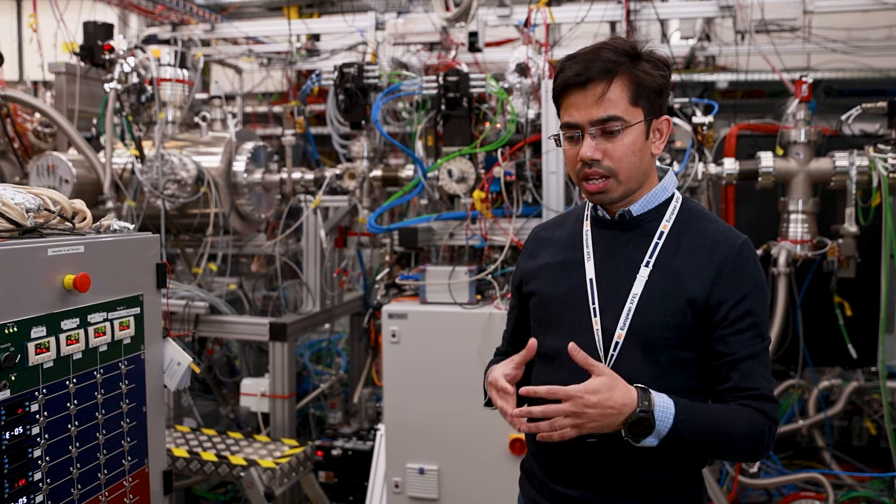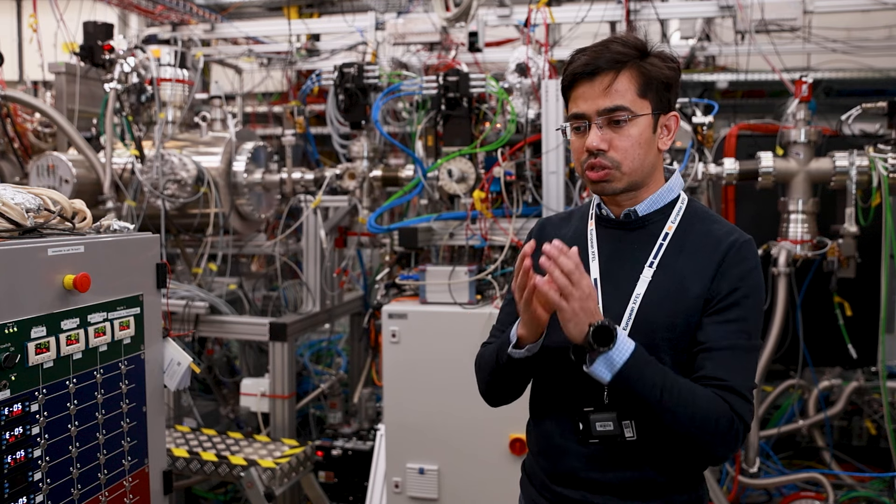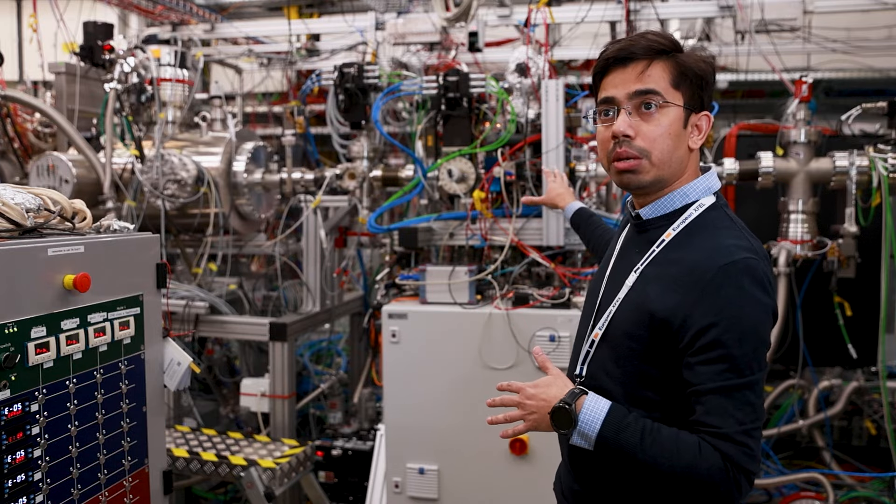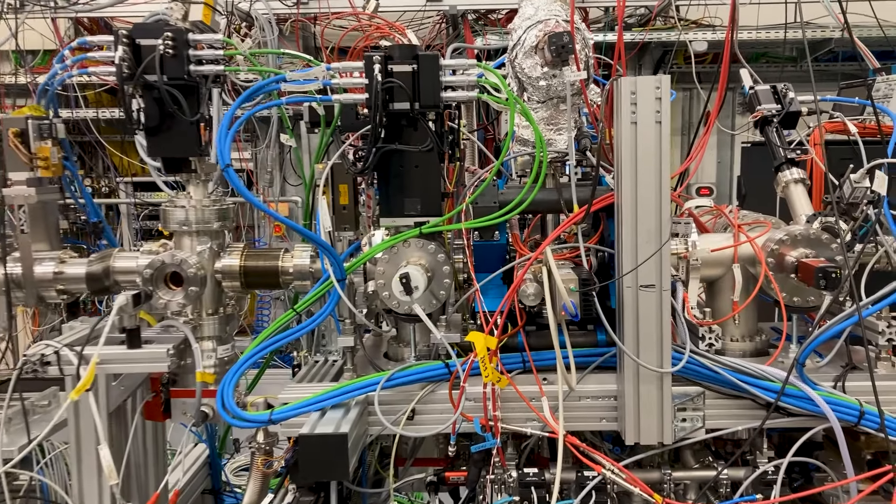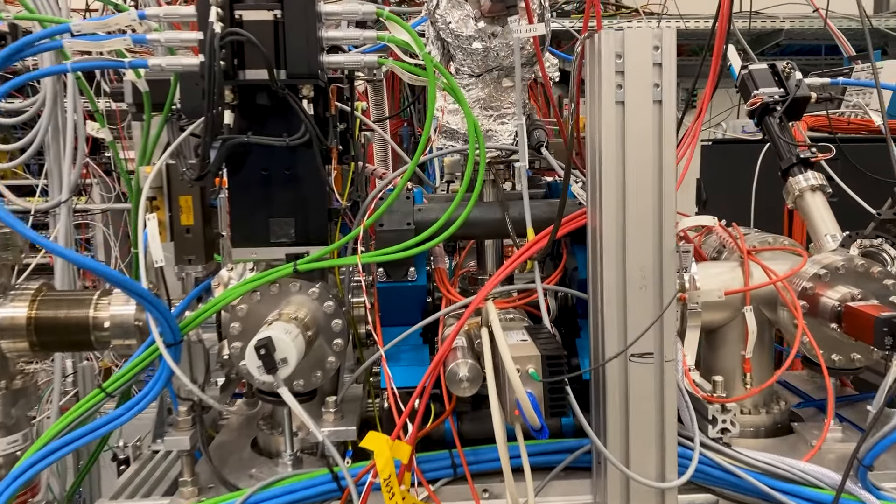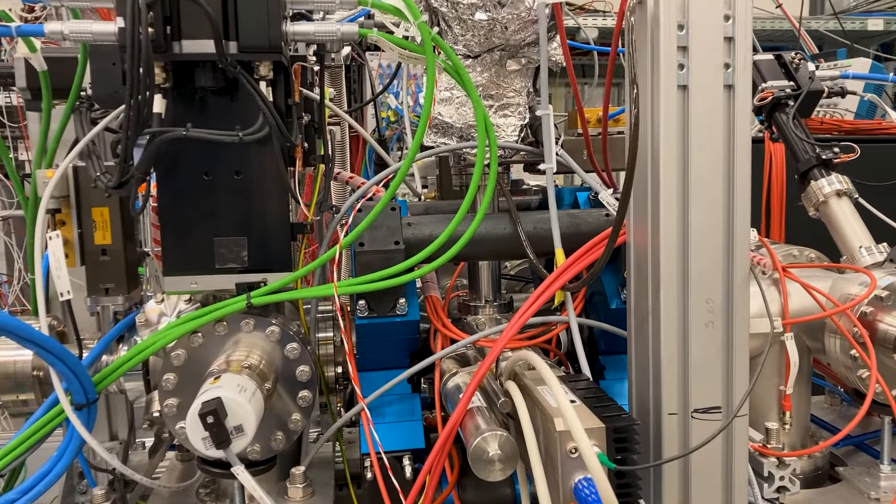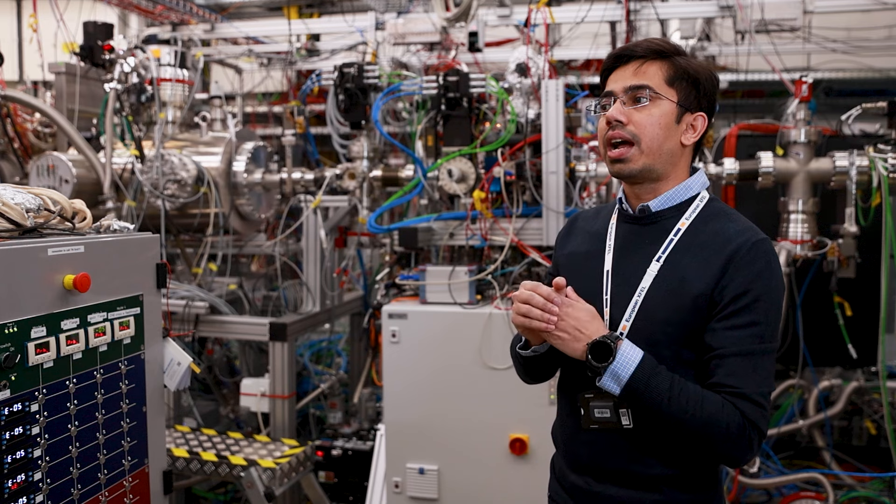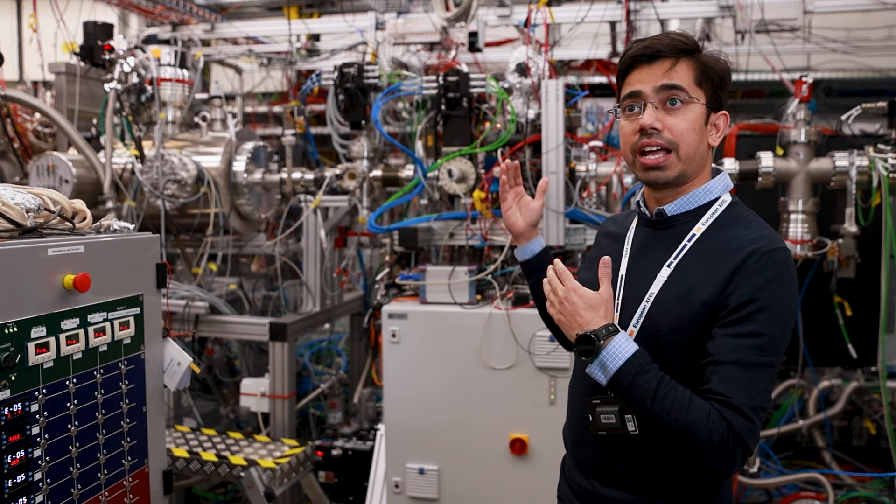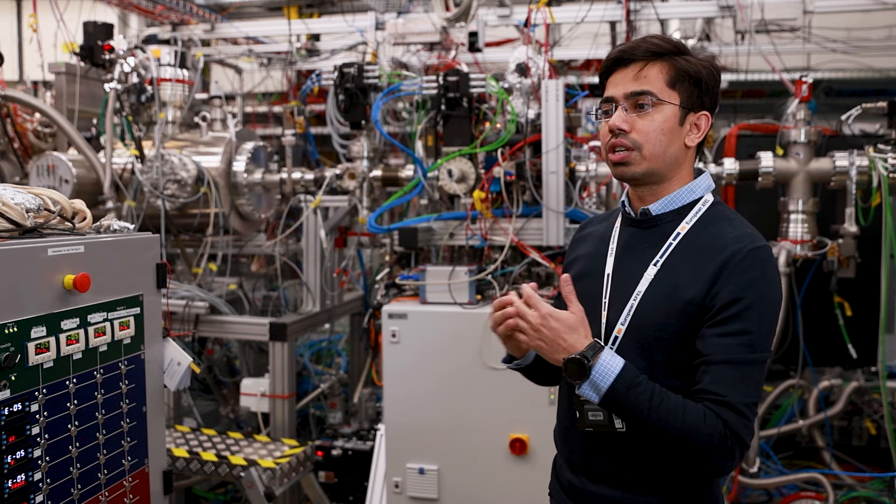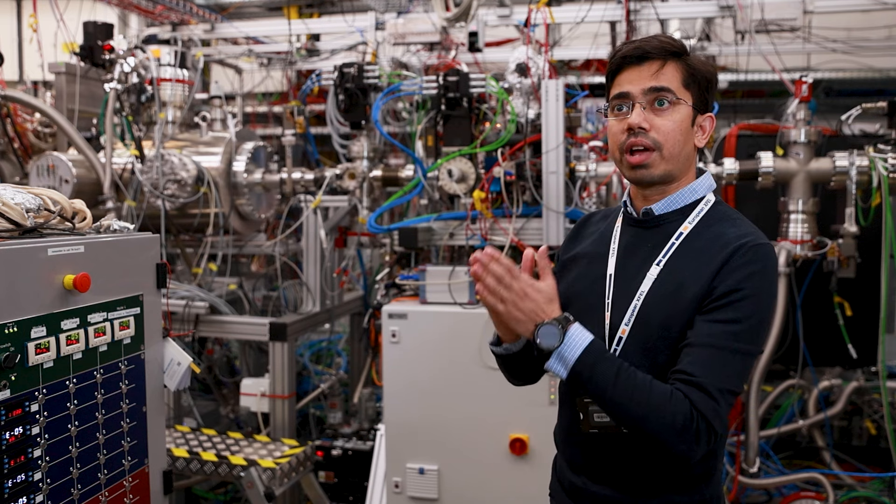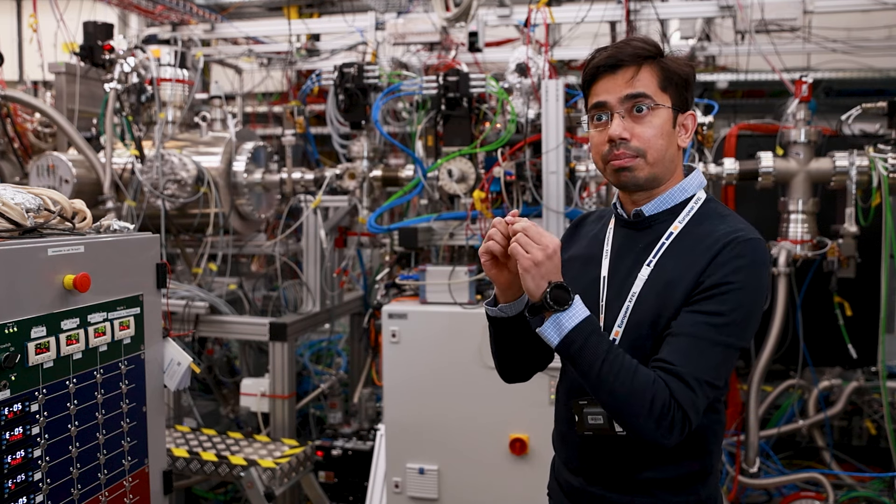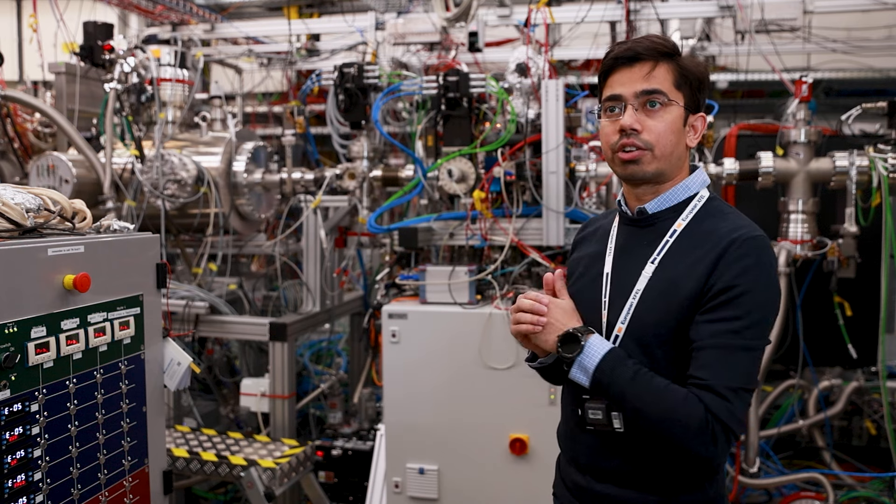What our research aims to do is study these fundamental atomic processes using this device called an electron beam ion trap. This device can produce a small, very tiny volume of that hot plasma that exists in those astrophysical objects. Using the X-ray free electron laser, we can photo ionize or photo excite the highly charged ions which are trapped in the electron beam ion trap.